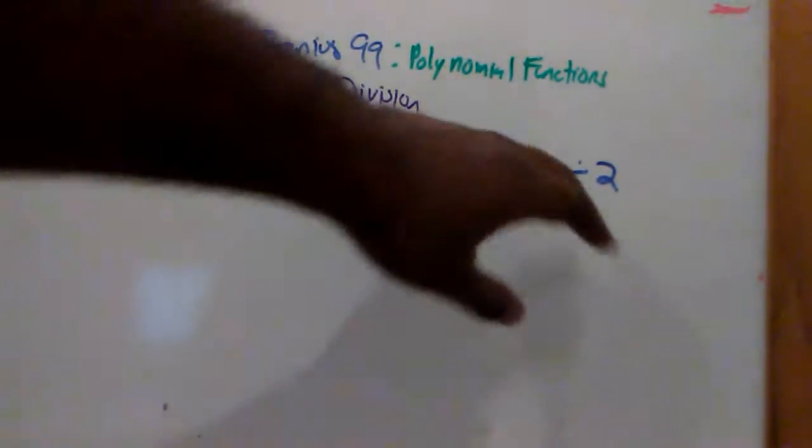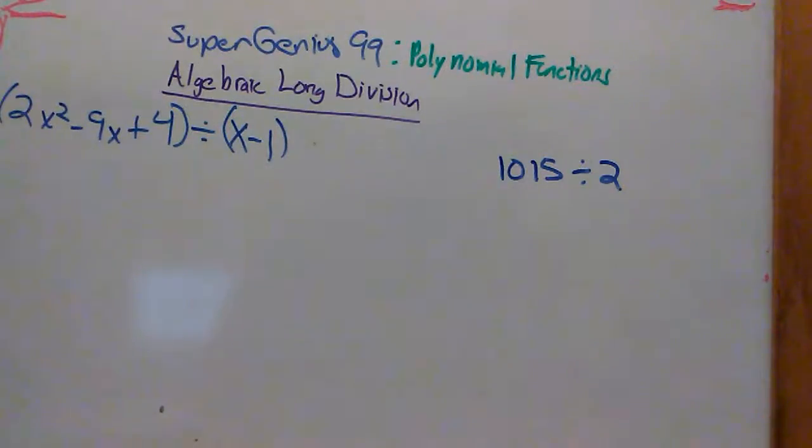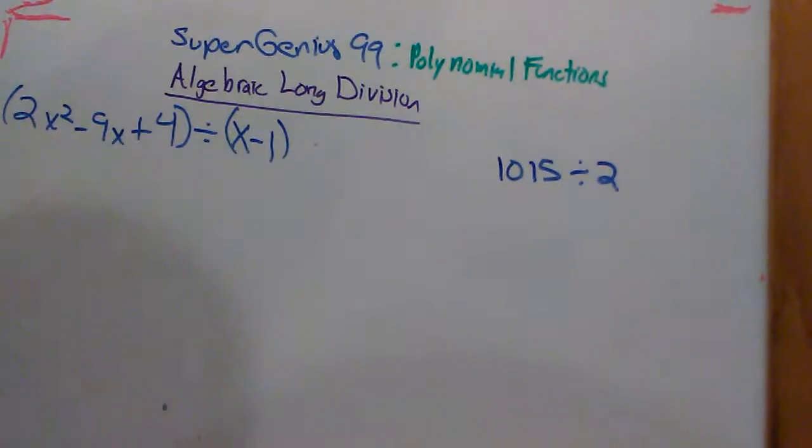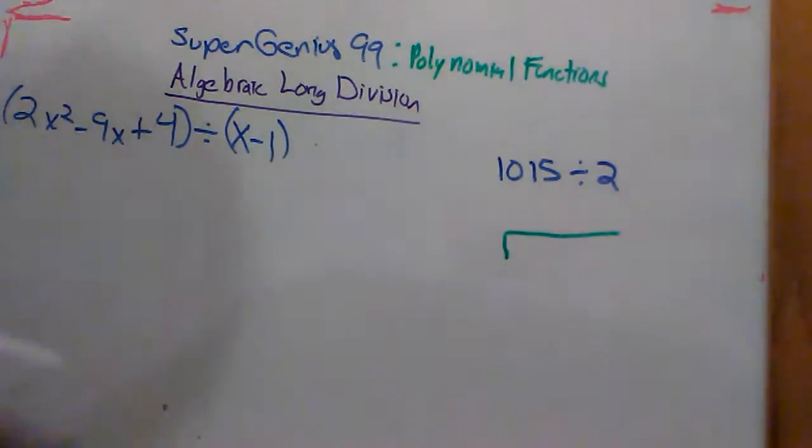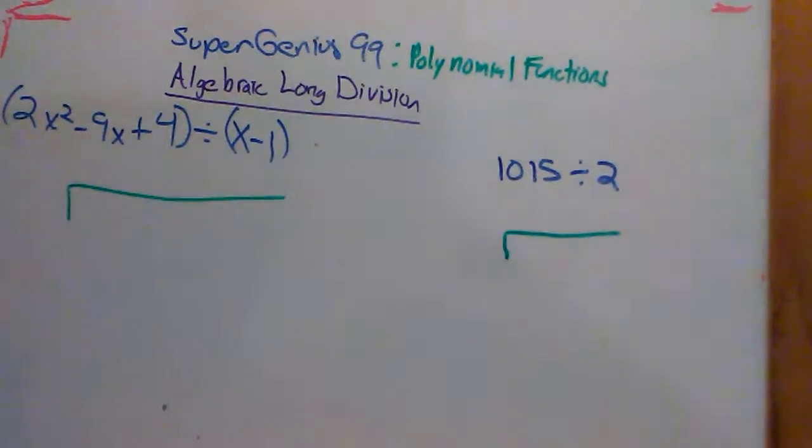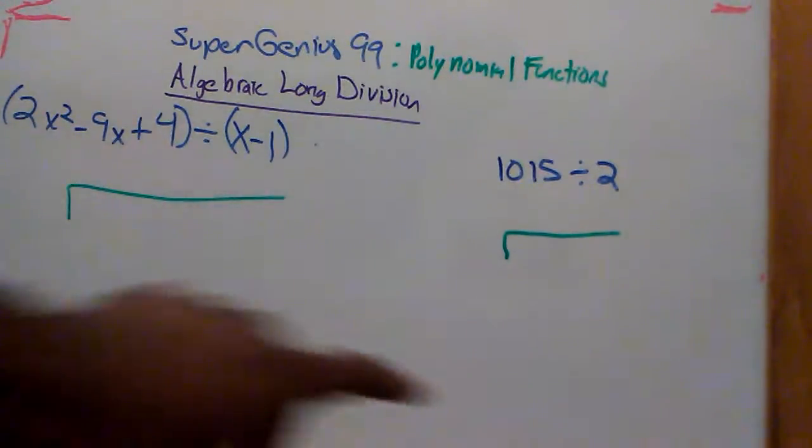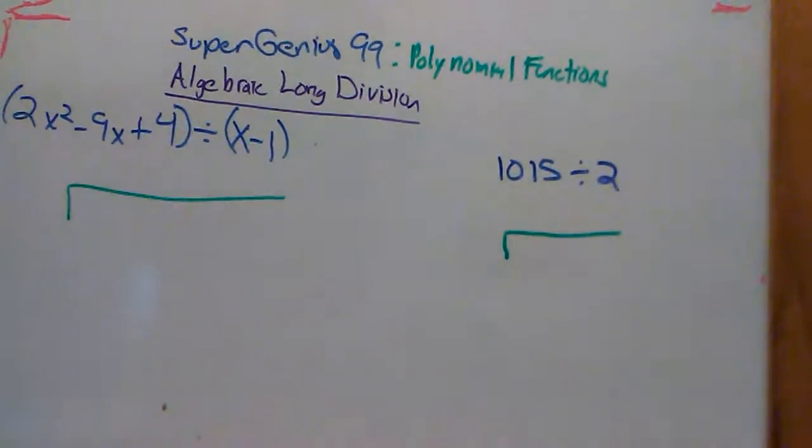When you have a normal integer division problem like this, and it could be decimal as well, usually what's the first thing you do? You reformat it by using this division bar, fraction bar, division bar here. So just like in integer division, you start off with this bar.